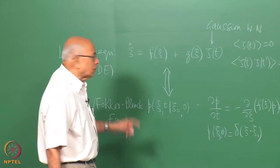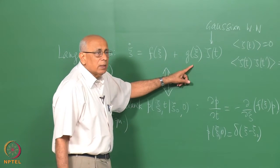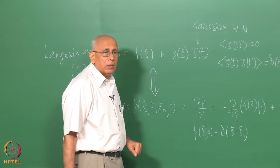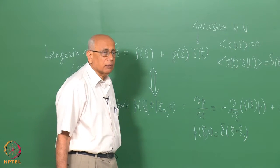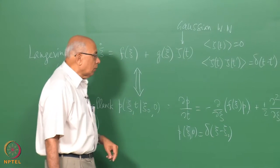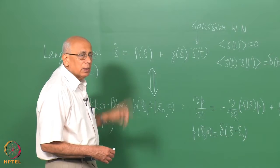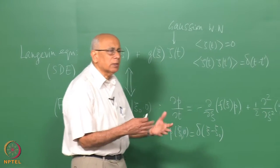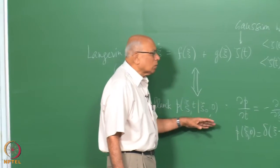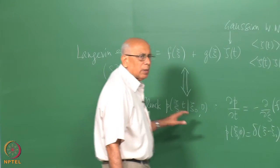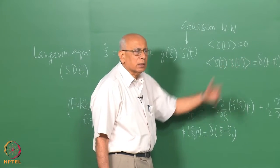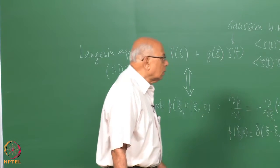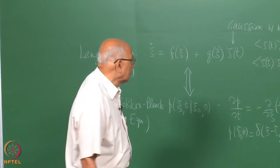There is also the question of interpretation of this equation because this deterministic term multiplies the noise. This is called multiplicative noise, whose amplitude depends on the value of the variable through this function. For multiplicative noise you have different ways of interpreting the equation, and we are using what is called the Ito interpretation. There is also a Stratonovich interpretation and several others, which gets into stochastic calculus. We will take this equation for granted and focus on very physical processes like motion of a Brownian particle or 3D motion in a potential.